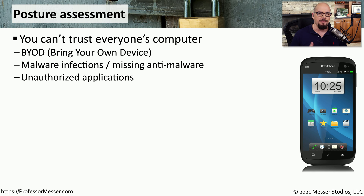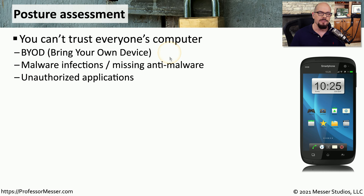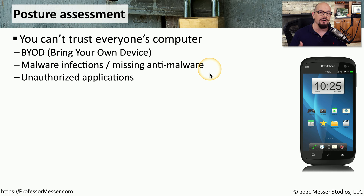One of the challenges with allowing people access to the network is sometimes they're using equipment that we did not provide to them. This would be a BYOD environment where you are bringing your own device. So you might have your own phone, you might have your own tablet, and you are connecting your device to the corporate network. The security team knows we'll be using your equipment to connect to the network, but we also want to protect what's in the network already. So we're concerned about malware that may already be on these devices, or perhaps the devices aren't even running any anti-malware software, or the applications already installed on these devices are applications we really don't want to run inside of the corporate network.